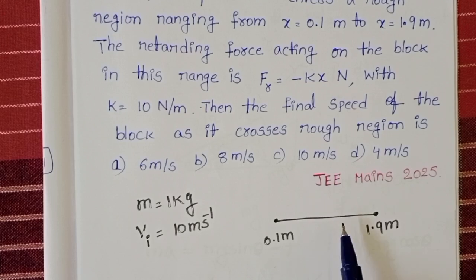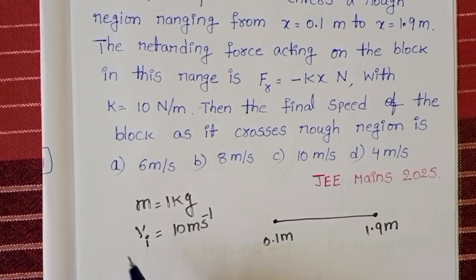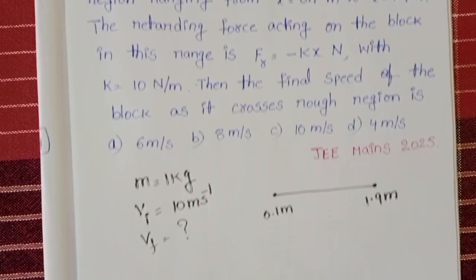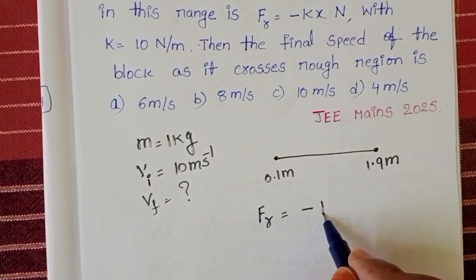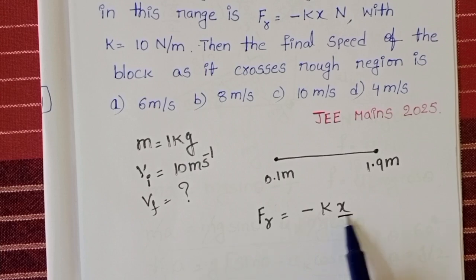We know due to the friction it opposes the motion of the body, so speed of the block decreases. Here we have to calculate the final speed of the block. Given frictional force is equals to minus kx. So here frictional force is a function of x.